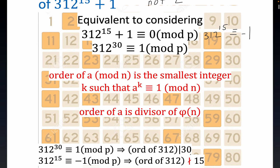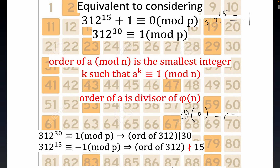A classic example: phi(p), by the definition of a prime number, equals p minus 1 — there are p minus 1 values relatively prime to p. So phi(p) = p − 1, and the order of any element divides this number.